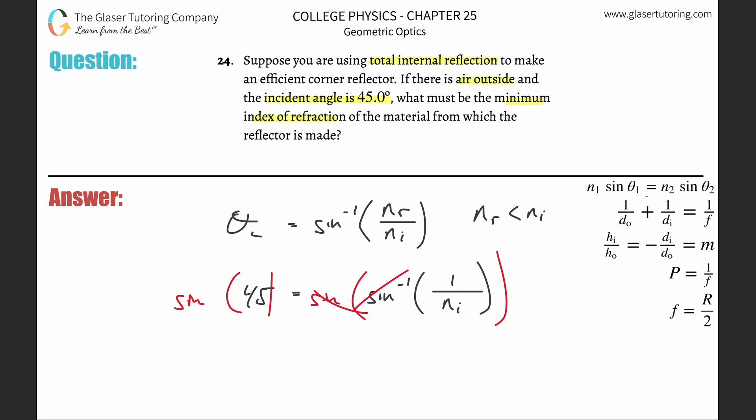So now you're left with sine of 45. You can plug that into your calculator in degree mode. That's 0.707, and that's equal to 1 over n sub i. Simply cross these two.